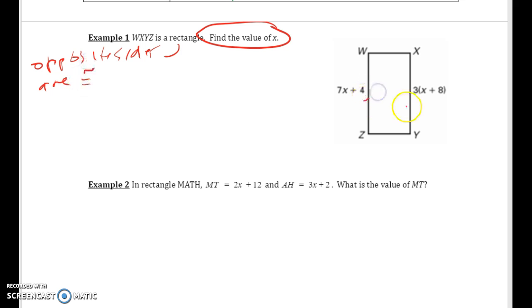Since a rectangle is a parallelogram, we know that WZ equals XY, so we can set these two expressions equal to each other. We need to now use algebra and we'll use our distribution property: 3x plus 24. We want to get our x terms to one side.